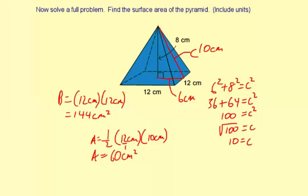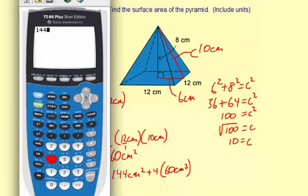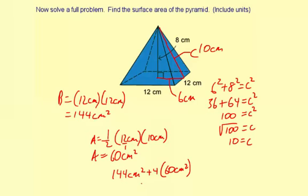And there are four of these triangles plus the base area for the total surface area. You're going to have 144 centimeters squared plus 4 times 60 centimeters squared. So 144 plus 4 times 60, 384. So 384 square centimeters is our total surface area of the pyramid.